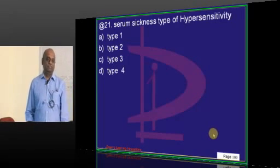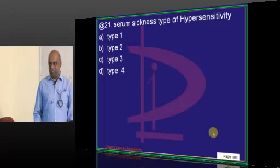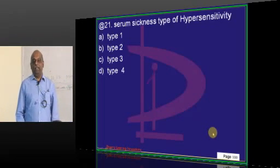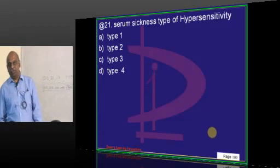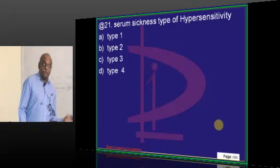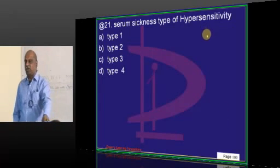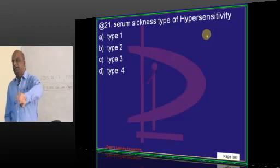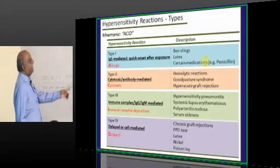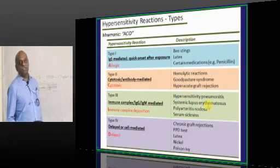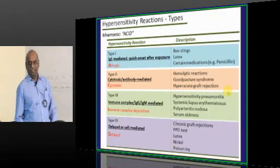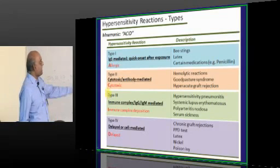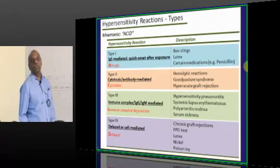One question on hypersensitivity. What is the difference between type 2 and type 3? A free-floating antibody against a fixed antigen is cytotoxic injury - type 2. A free antigen and free antibody together form an immune complex that deposits - type 3 serum sickness. Polyarteritis nodosa, SLE, hypersensitivity pneumonitis are all type 3. Blood transfusion hemolytic reactions and hyperacute graft rejection are type 2.